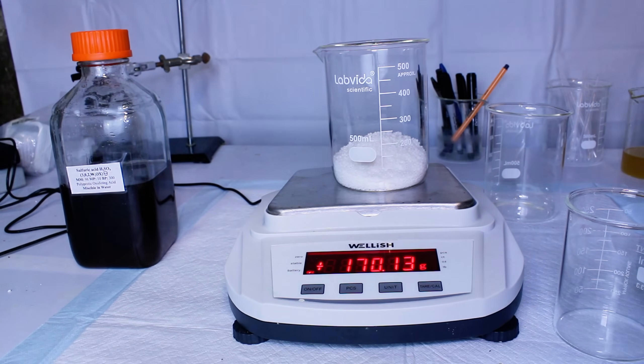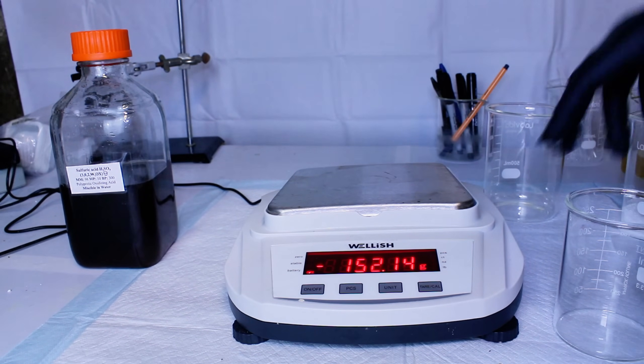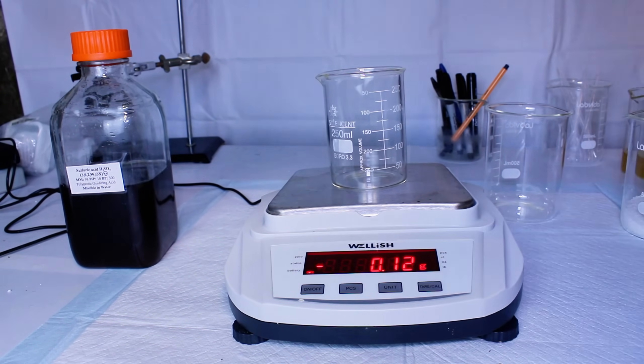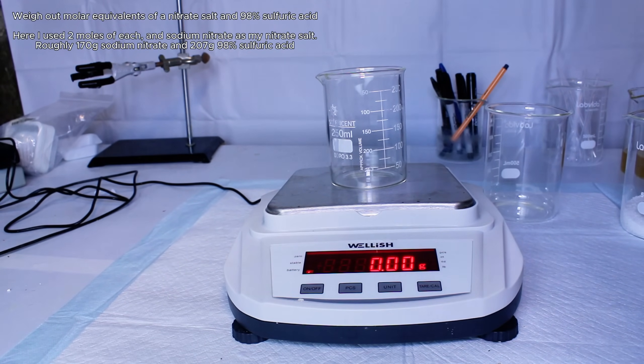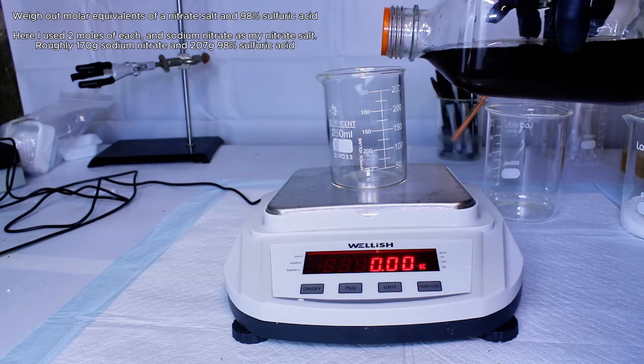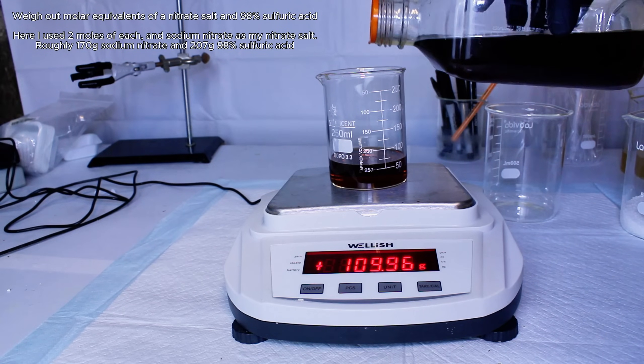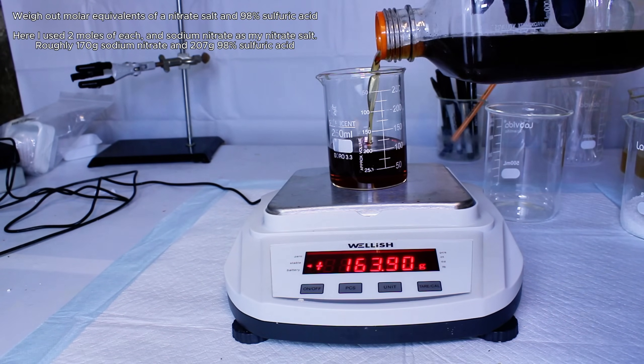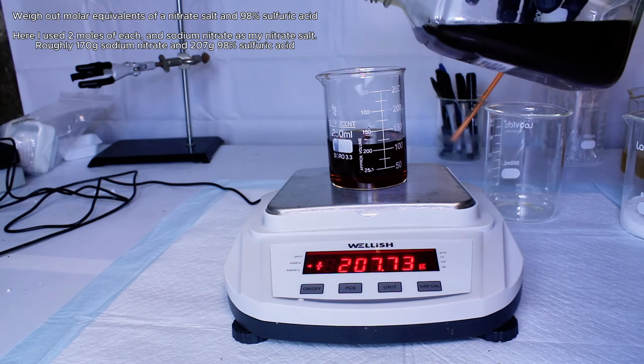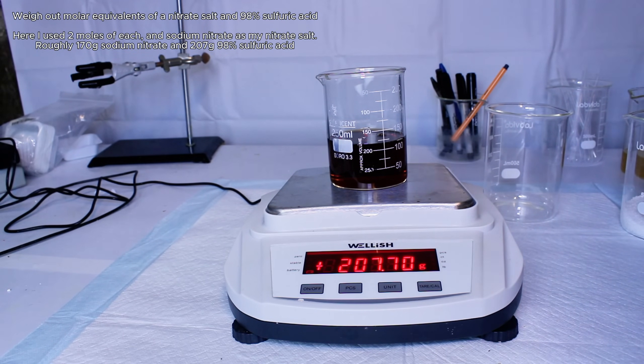To get started, I simply weigh out equal stoichiometries of concentrated 98% sulfuric acid and sodium nitrate. I decide to use two moles of each, which represents 170 grams of sodium nitrate and 207 grams of sulfuric acid, which is in slight excess.